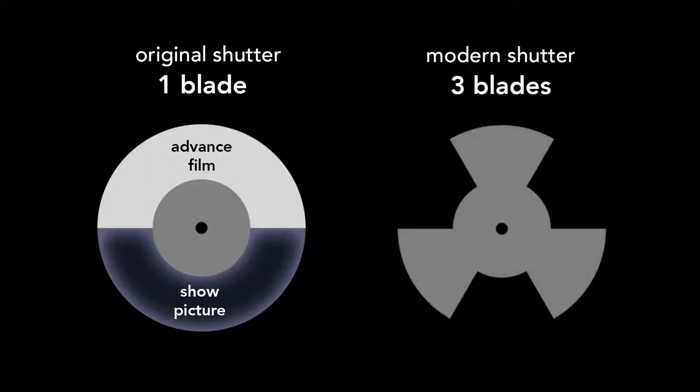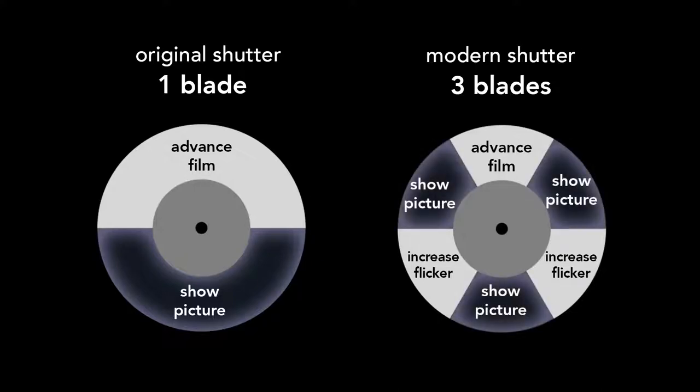Originally, shutters had a single blade that covered the advancement of the film with an open section that showed the picture. Modern shutters have three blades. The first blade covers the film motion. The second two blades block the light even when the film is stationary. They only serve to increase the flicker rate. The three openings allow the image to be projected half the time. Here I've labeled the three blades with one, two and three dots. Notice that the shuttle moves downward only when blade number one blocks the light.